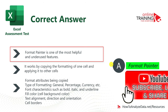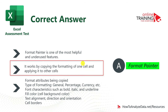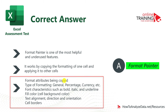Format Painter is one of the most helpful and underused features of Microsoft Excel. It copies formatting from one cell and applies it to others. Format attributes being copied include numeric types such as general, percentage, and currency, as well as font characteristics like bold, italic, and underline. You also copy fill color, text alignment, cell borders, and many other things.